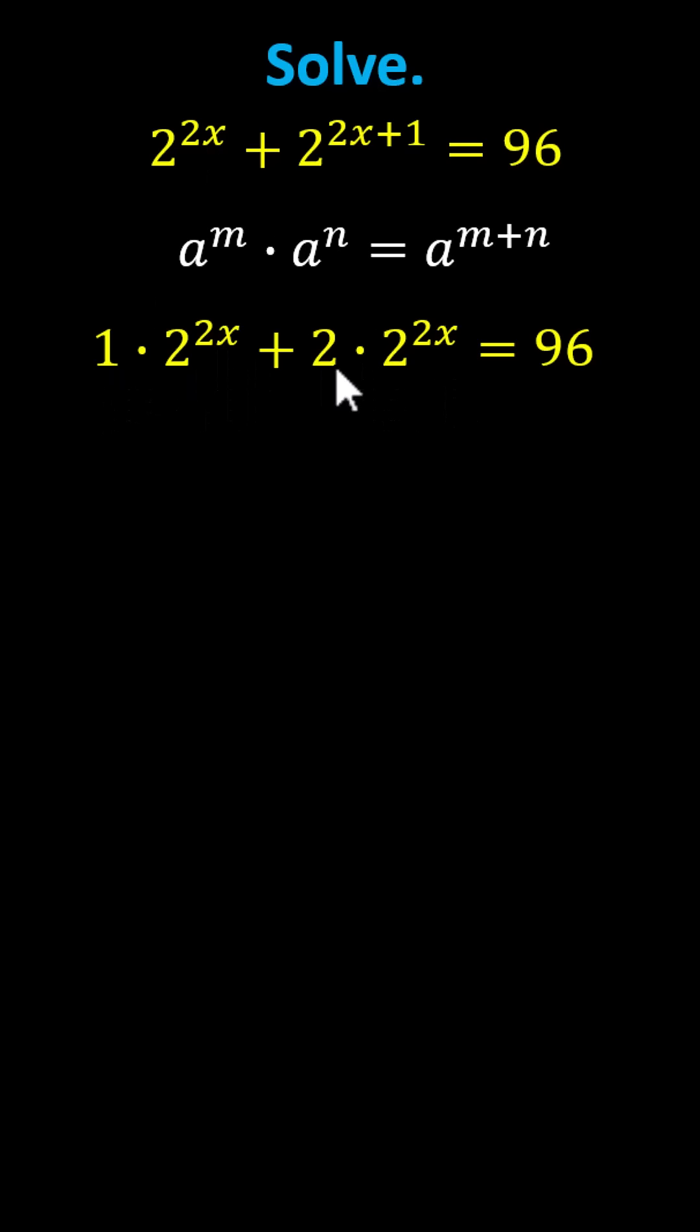And now we can add the two terms on the left. 1 times 2 to the power of 2x plus 2 times 2 to the power of 2x is equal to 3 times 2 to the power of 2x. Notice we're adding these terms just like we add like terms.